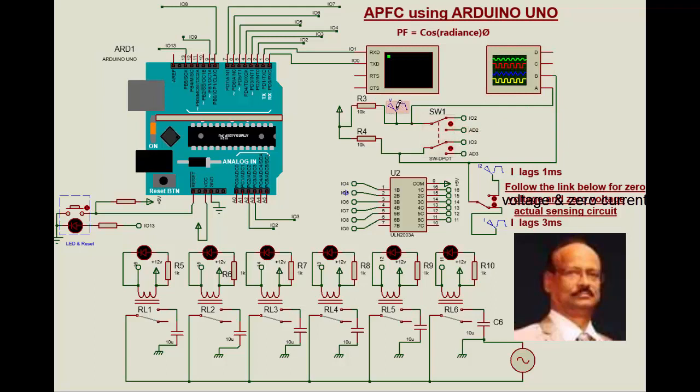This is zero voltage reference, this is zero current reference which is coming from the HVDT switch. In this setting it will be giving 3 millisecond lag and this side it will give you 1 millisecond lag. If you want to see the exact circuit of this voltage reference and zero current reference, the link is given below for the complete circuit.